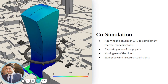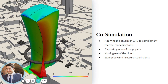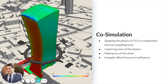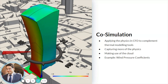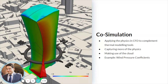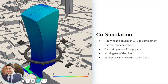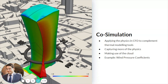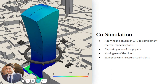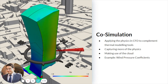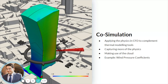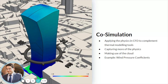The first major trend is co-simulation — applying the physics in CFD to complement thermal modeling tools. This is really important, because a lot of these thermal modeling tools were developed 20-plus years ago when we didn't have the cloud or the fantastic processing power we have now. A lot of the physics in there was based on simplified relationships from empirical modeling. We don't need to do that anymore.